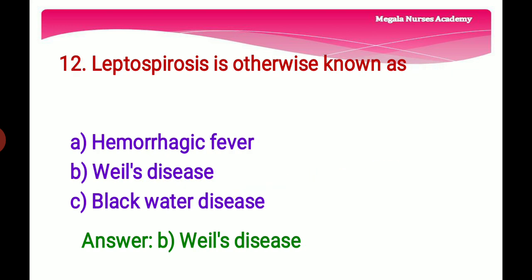Twelfth question: Leptospirosis is otherwise known as — Option A: Hemorrhagic fever, a group of illnesses caused by four families of viruses. Option B: Weil's disease, a bacterial disease spread through the urine of infected animals, caused by Leptospira bacteria. Option C: Black water fever, an acute intravascular hemolysis from anti-malarial drug use. The right answer is Option B, Weil's disease.